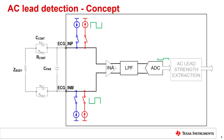The capacitance C-parallel, shown in the figure, represents the equivalent differential capacitance between the ECG input pins when the leads are off. Such a capacitance could be a combination of the input capacitance of the ECG pins, the PCB trace capacitance, as well as the capacitance resulting from the electrode metal plates. The parallel R-contact and C-contact represent a model for the AC contact impedance, and Z-body is a model of the impedance of the body between the two electrodes. For simplicity, we assume Z-body to be negligibly small compared to the electrode contact impedance.